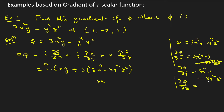Finally for the k-cap term, ∂φ/∂z: in the first term there is no z, so it becomes 0. In the second term, y³ is constant and the derivative of z² is 2z. So ∂φ/∂z = −2y³z. This is the gradient of φ.